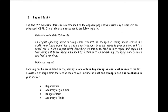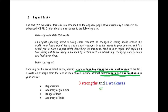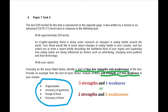In task number four, you are basically given an essay-like text written by a learner, and you're supposed to talk about its positive and negative sides. Here it reads that you need to outline a total of four strengths and weaknesses covering its organization, accuracy of grammar, range of lexis, and accuracy of lexis. It simply means that you need to provide either three strengths and one weakness, or two strengths and two weaknesses. While talking about these strengths and weaknesses, you need to cover each aspect.